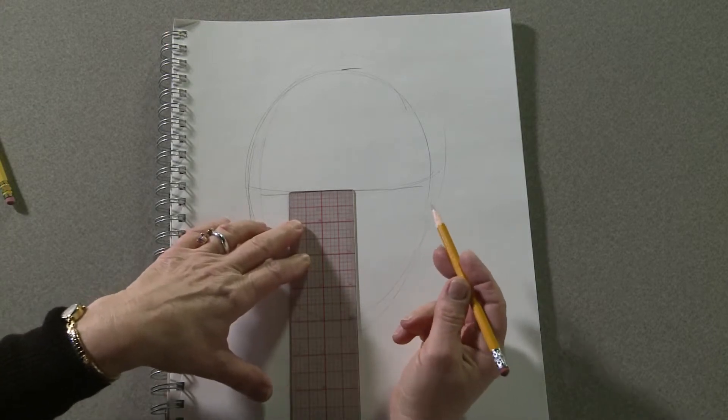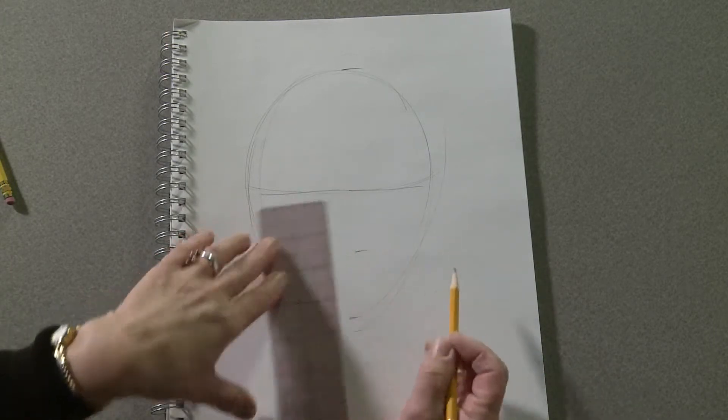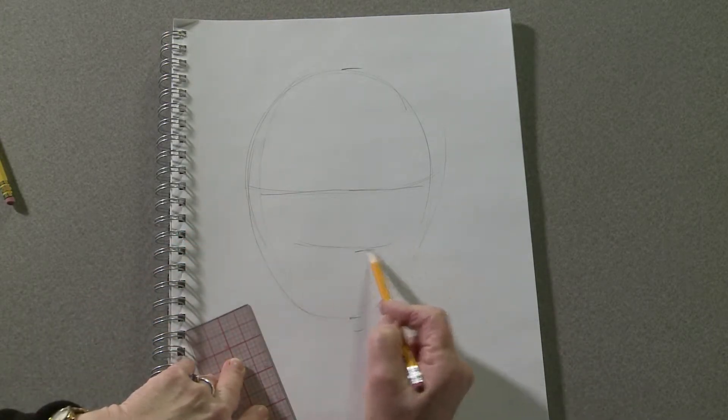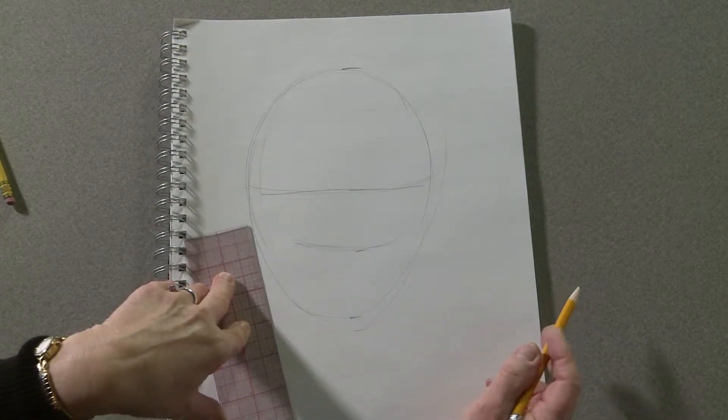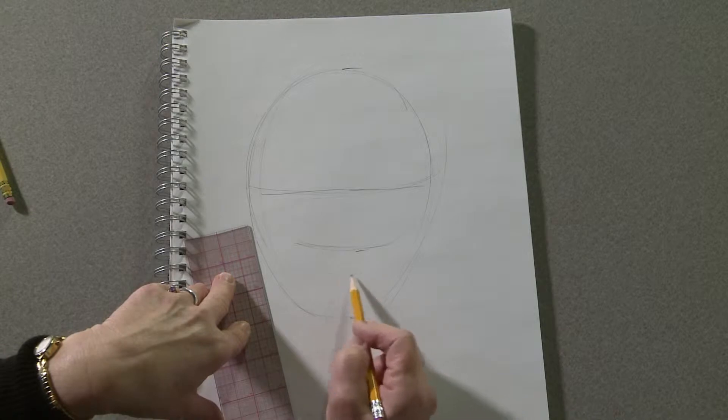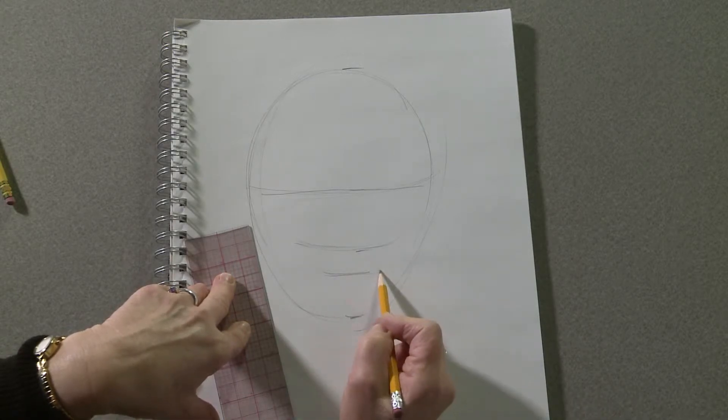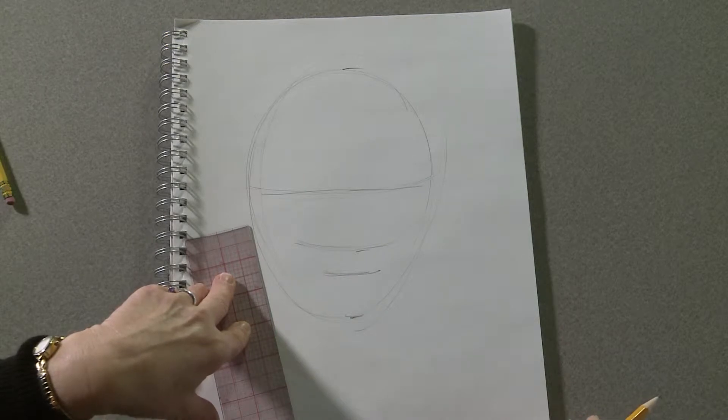Halfway between this line and the chin, draw another guideline and that will represent the location of the bottom of the nose. And a little less than halfway, you'll have to use your judgment here, draw a guideline for the mouth.